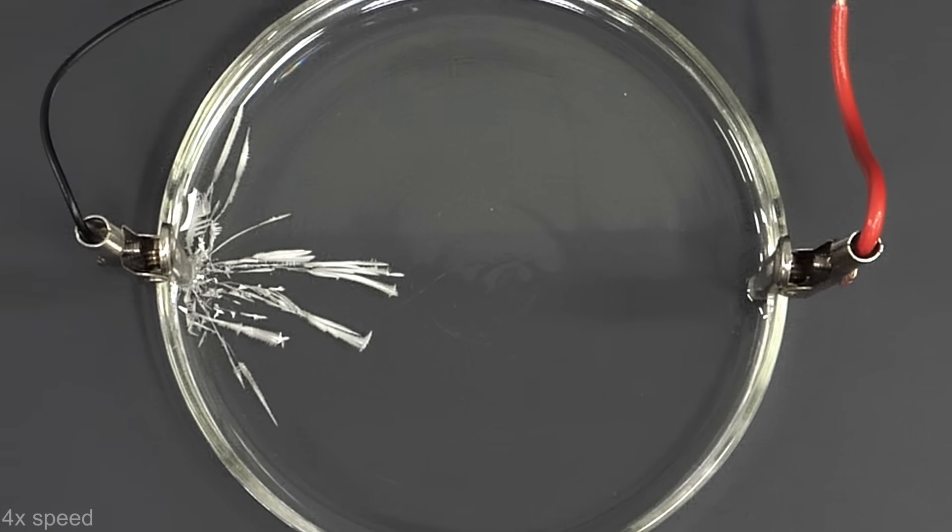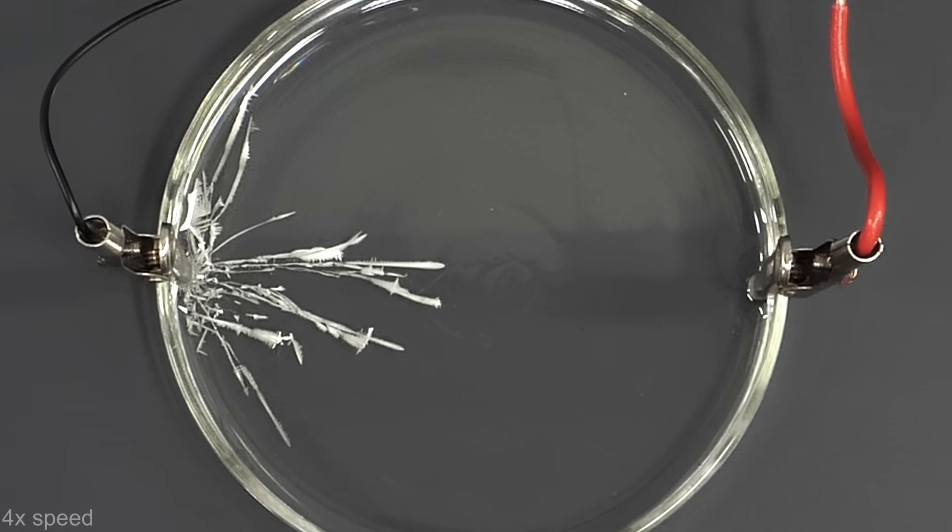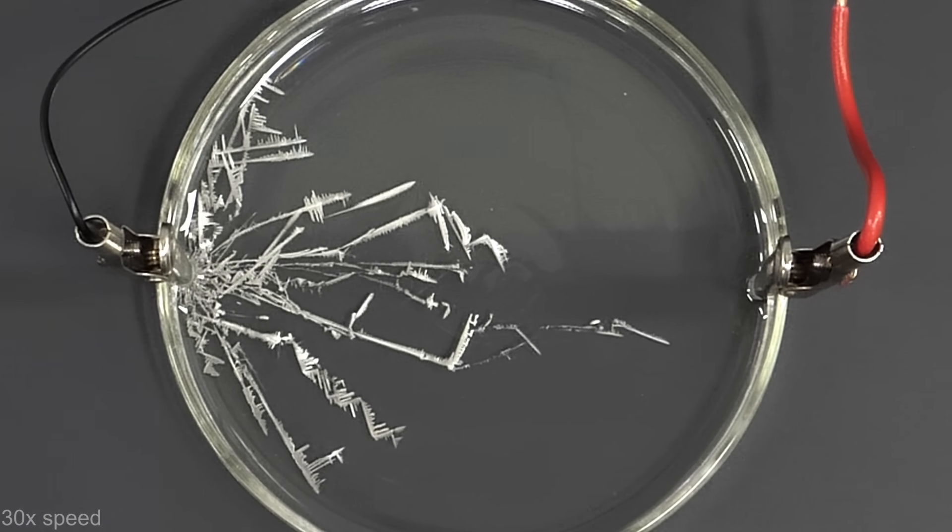This was happening because the batteries were giving electrons to the tin chloride, and turning it back into its metallic form.